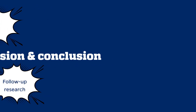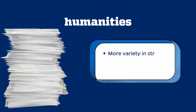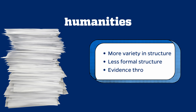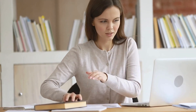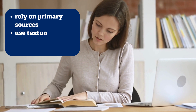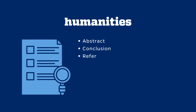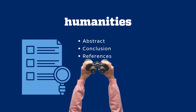Now let's talk about scholarly articles in the humanities. Humanities disciplines include fields like art history, philosophy, classics, languages, and history. Scholarly articles in the humanities may have more variety in structure than social science and science articles typically have. They usually don't follow the same formal section structure, instead weaving evidence throughout. Furthermore, they often don't use statistical analyses or methodologies, but rely on primary sources or textual analysis to support their arguments. They will usually still have an abstract, conclusion, and references, so you can use these tools to determine the relevance of a humanities article for your own research.